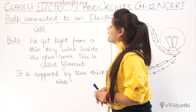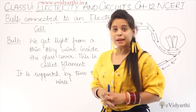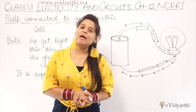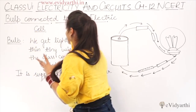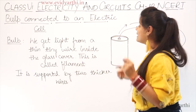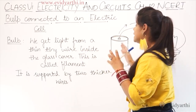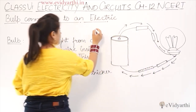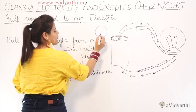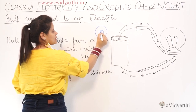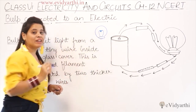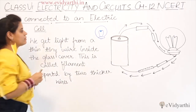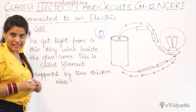Now we move to our next topic: Bulb connected to an electric cell. First, what is a bulb? I'm sure you've all seen one at home. We get light from a tiny, thin wire inside the glass cover - this is called the filament. If you look carefully inside a bulb, you will see this thin wire. This is the filament. And it is supported by two thicker wires.